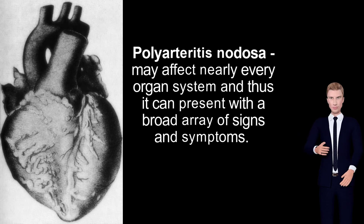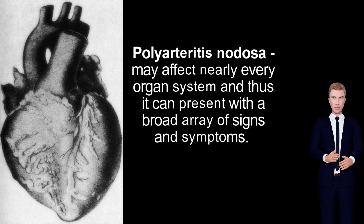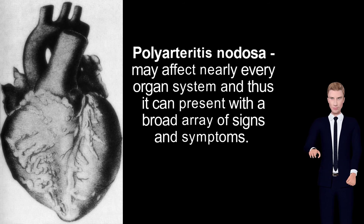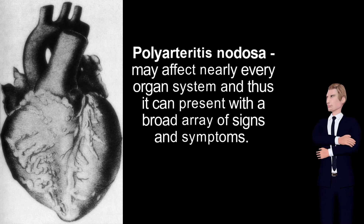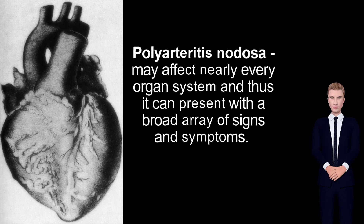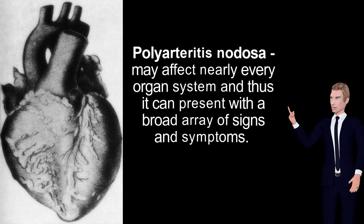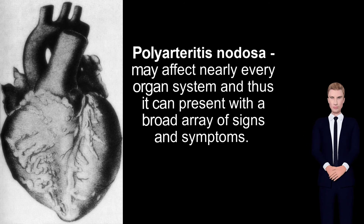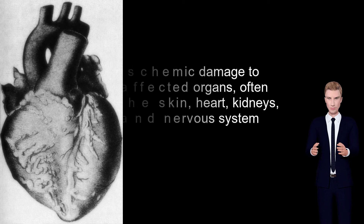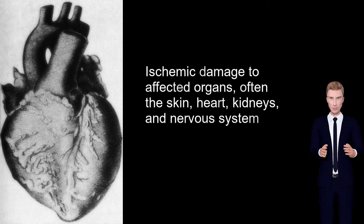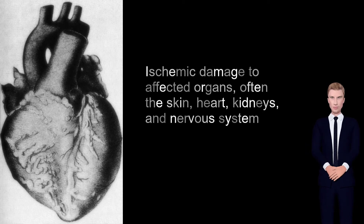Polyarteritis nodosa affects medium-sized muscular arteries, typically involving the arteries of the kidneys and other internal organs but generally sparing the lung circulation. Polyarteritis nodosa may be present in infants and may affect nearly every organ system, presenting with a broad array of signs and symptoms. Manifestations result from ischemic damage to affected organs, often the skin, heart, kidneys, and nervous system.